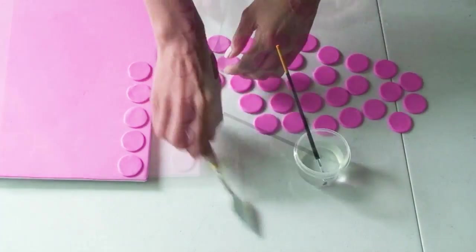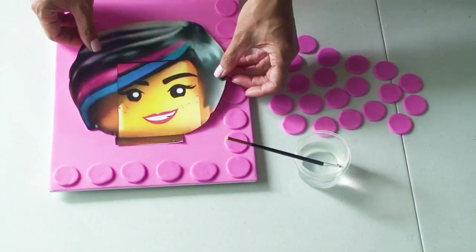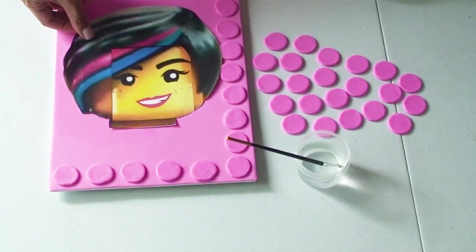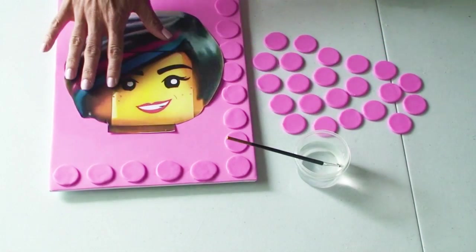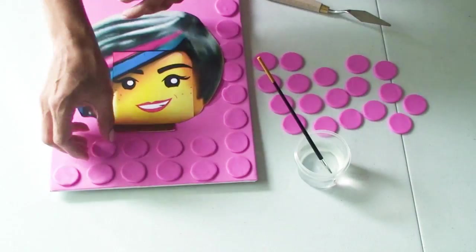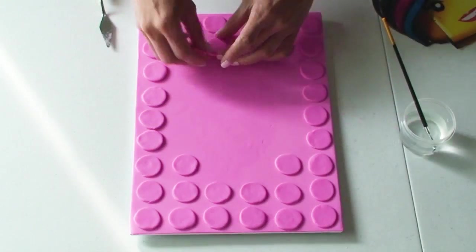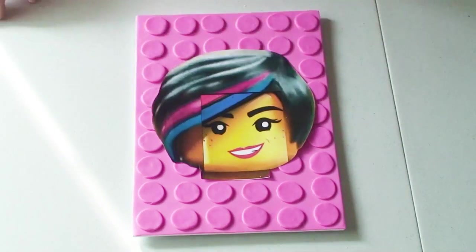We start to create that LEGO board effect. Because I'm going to put the cake in the center of the board, I don't really need to cover it with all the pink circles, so I'm just going to use my template as a guide. Work around the template and once we've finished with the circles, the cake's going to sit nicely in the center.